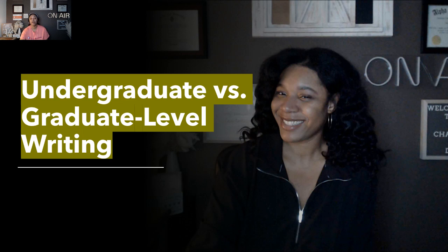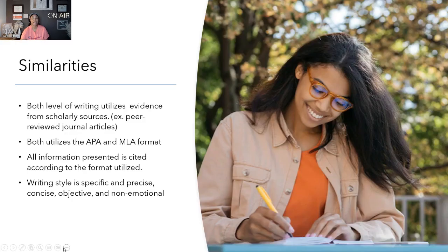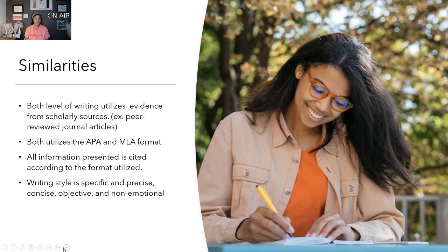What are some similarities between undergraduate writing and graduate writing? Both levels of writing utilize evidence from scholarly sources — for example, peer-reviewed journal articles. Professors will tell you that the only sources they want you to use are scholarly journal articles, because many sources out there are not credible. It's important in both graduate and undergraduate programs to remember that scholarly journal articles are very important to use as sources.